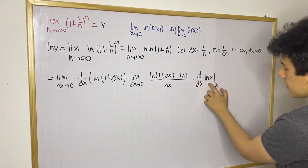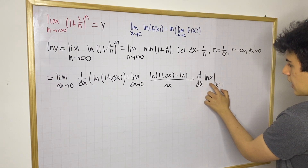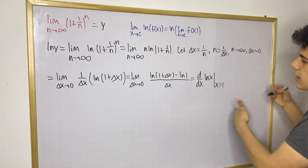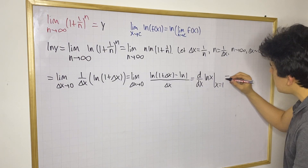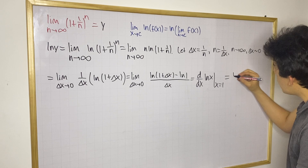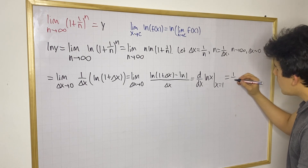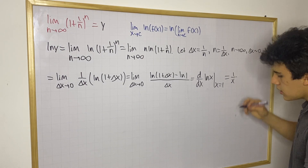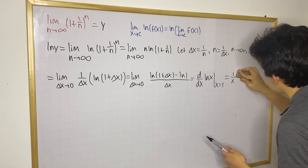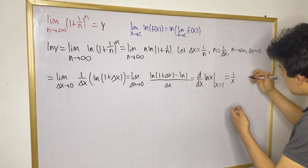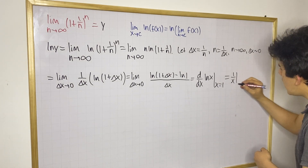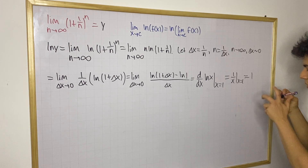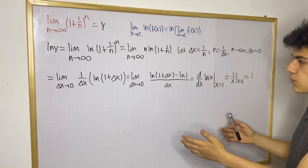Now you can see the resemblance with the definition of a derivative. You have a variable going to 0, and this is basically the derivative with respect to x of ln(x) evaluated at x equals 1. So we can find the derivative of ln(x) and evaluate it at x = 1. The derivative of ln(x) is 1/x, and evaluated at x = 1 that gives us 1/1 = 1.